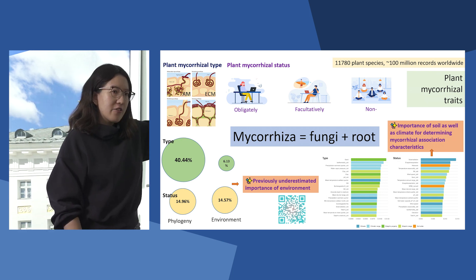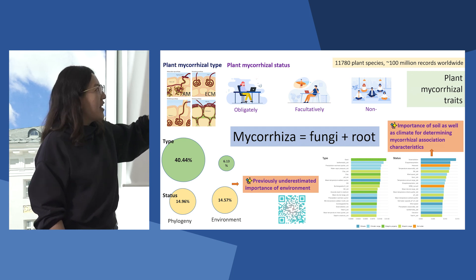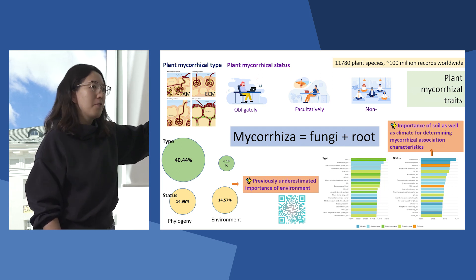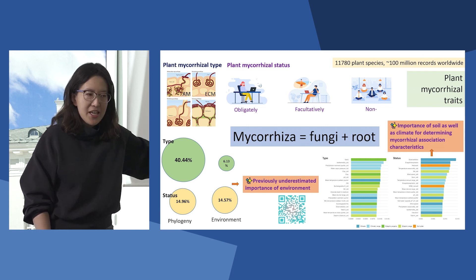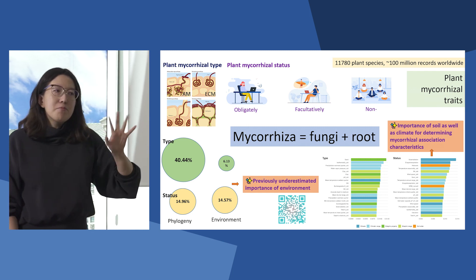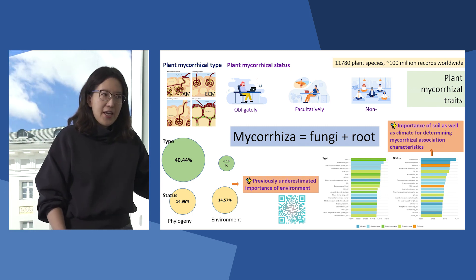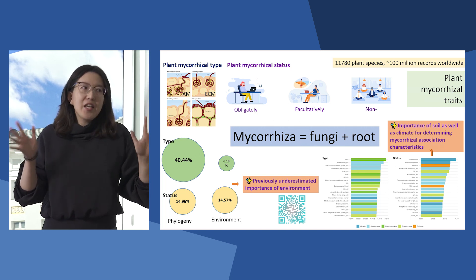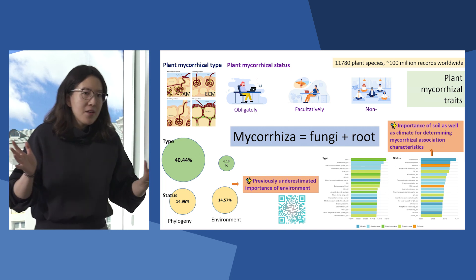You can see that we list the 20 most important environmental variables for plant mycorrhizal traits. The green colors are climatic factors and the soil factors are basically the same number, proving that soil and climate are equally important for plant mycorrhizal traits.